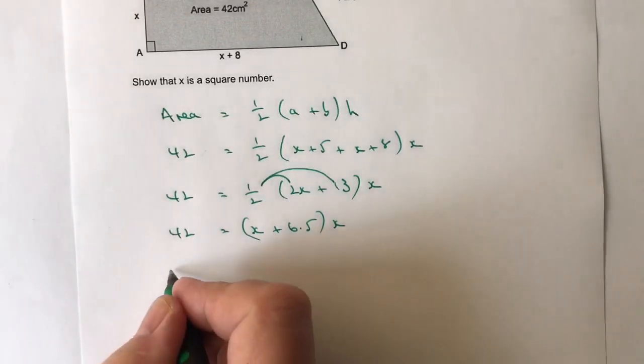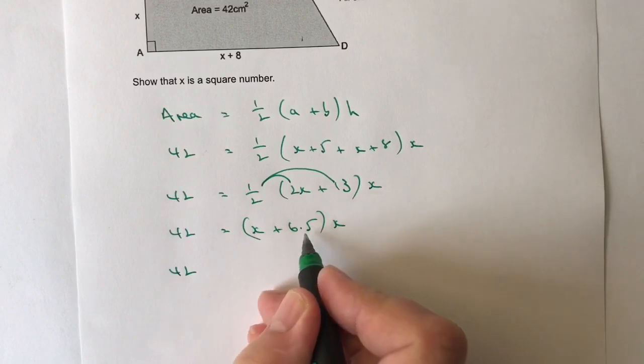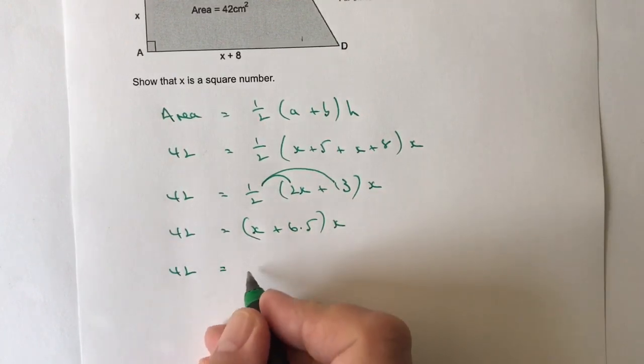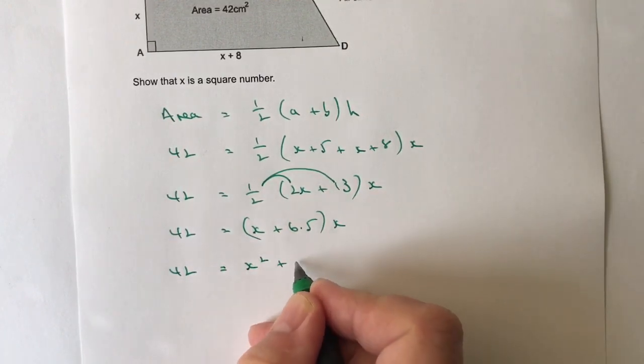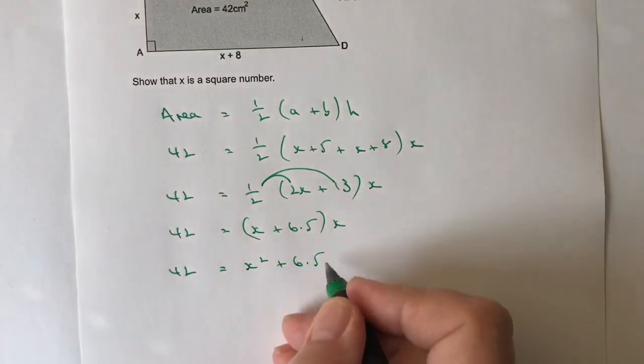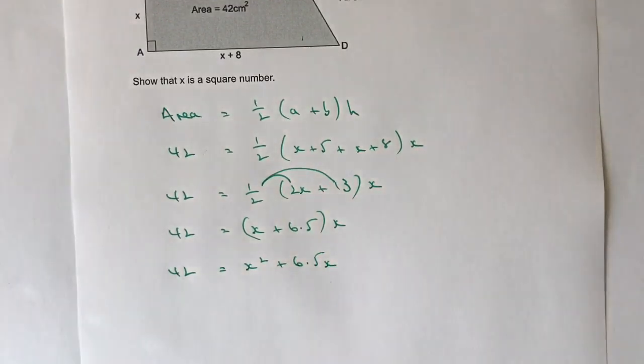So I've got 42 and then I'm going to multiply this side by the x. So I'm going to get x squared plus 6.5x. And what I need to do now is to manipulate this to create a quadratic equation that I can solve. And also make sure that it's equal to 0.